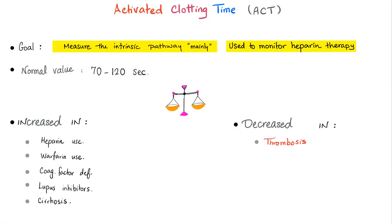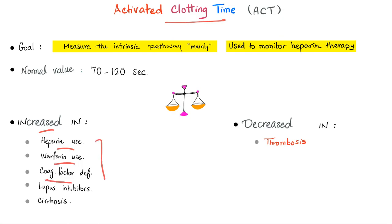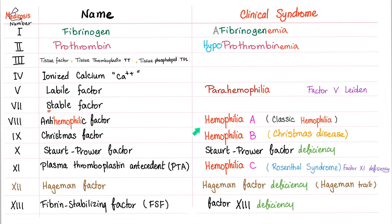Activated clotting time or ACT: the goal is to measure the intrinsic pathway and to monitor heparin therapy. Normal value: 70 to 120 seconds. If I'm bleeding, it's going to increase. If I'm clotting, it's going to decrease. Too little coagulation factors — you bleed; too much — you thrombose. ACT will be prolonged in cases of heparin use, warfarin use, coagulation factor deficiency, lupus inhibitor, and cirrhosis. Decreased ACT occurs when the patient is thrombosing.